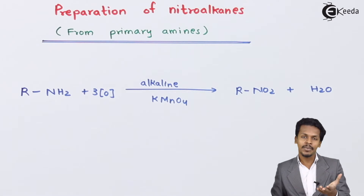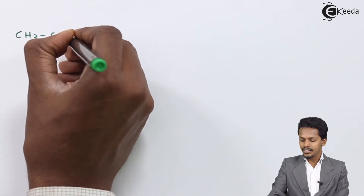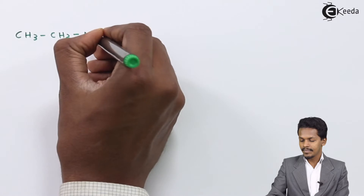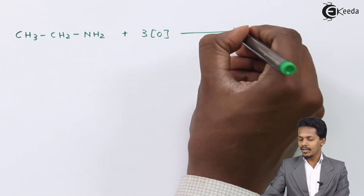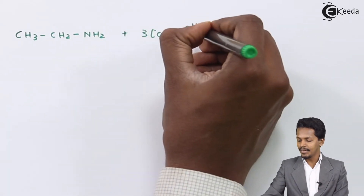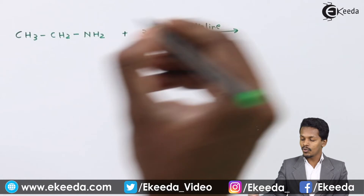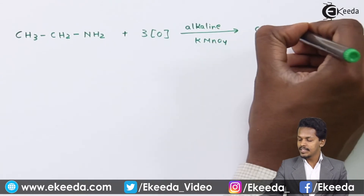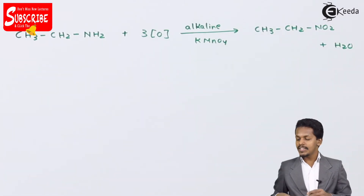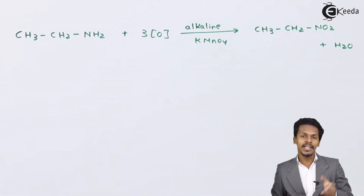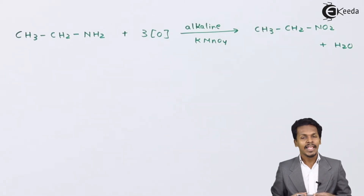Now let me give you an example. Suppose we are considering ethylamine, and we react it with three nascent oxygen atoms obtained from alkaline KMnO4 solution, which is an oxidizing agent. The product we obtain is CH3CH2NO2, along with water as a byproduct. This product is known as primary nitroalkane.